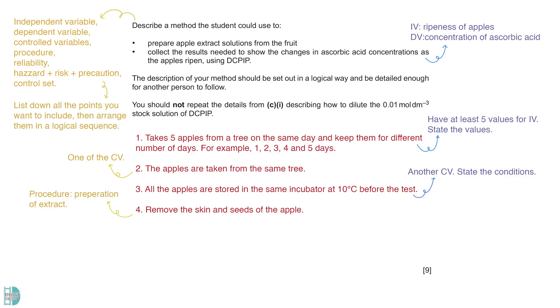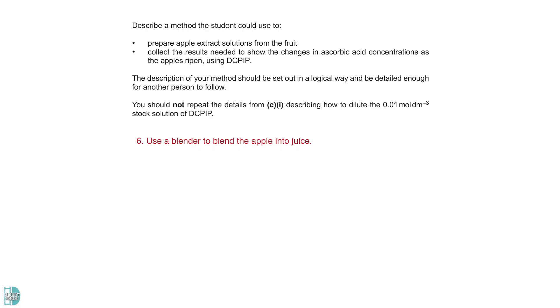Remove the skin and seeds of the apple. We should use the same mass of apple flesh to prepare the extract. You can use a weighing scale to weigh them. It is a good idea to state the mass you want to use. Then, use a blender to blend the apple into juice.